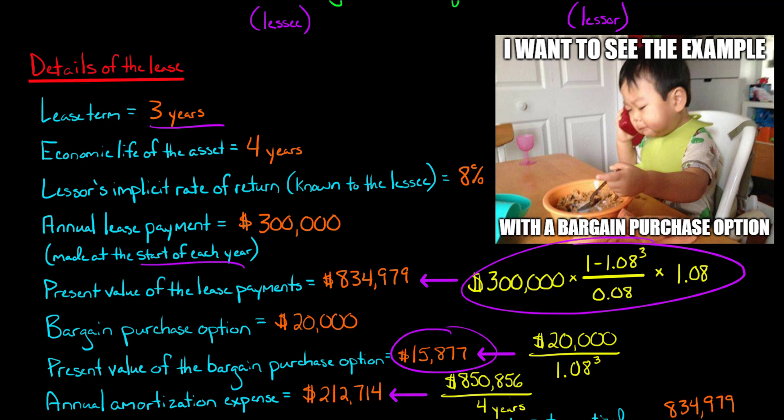That's the present value of the bargain purchase option. You add that to the present value of the lease payments, and these two things together are going to be the initial lease liability. In this example, we don't have any initial direct costs being incurred by the lessee, so the initial right-of-use asset will be equal to the initial lease liability — $850,856.